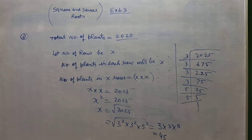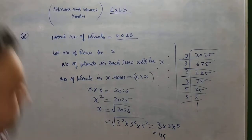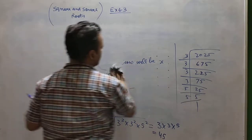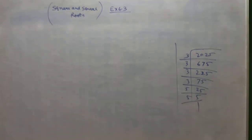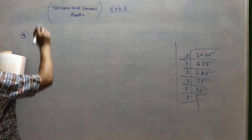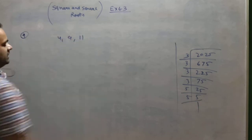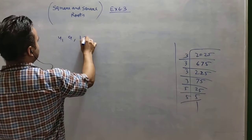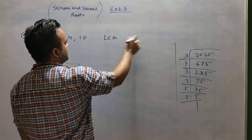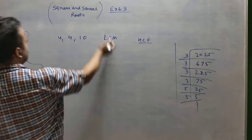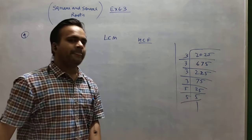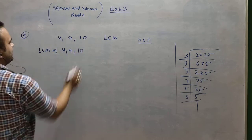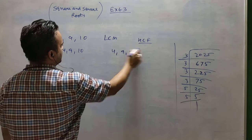Question number 9: find the smallest square number that is divisible by 4, 9, and 10. The difference between LCM and HCF is that LCM gives a number divisible by all given numbers. Since we need a number divisible by all three, we find the LCM of 4, 9, and 10. LCM of 4, 9, 10 — using the division method with 2, 2, 3, 3, 5 — gives 180.